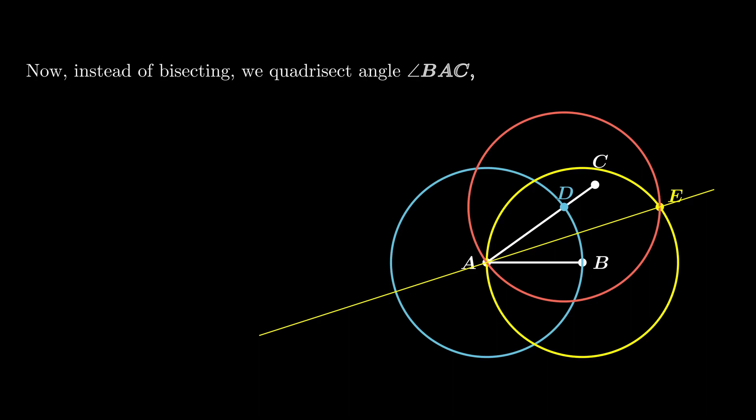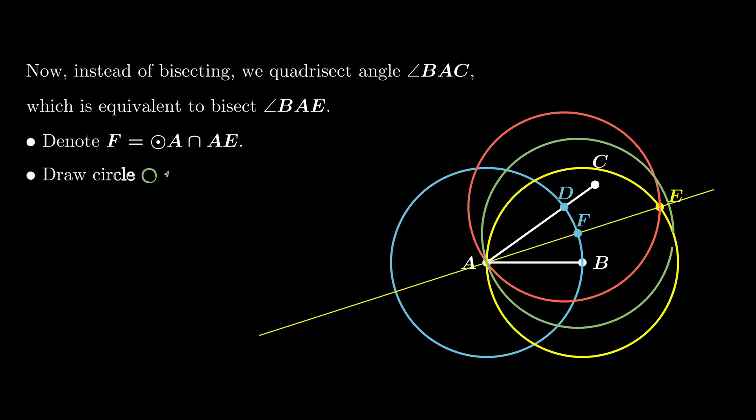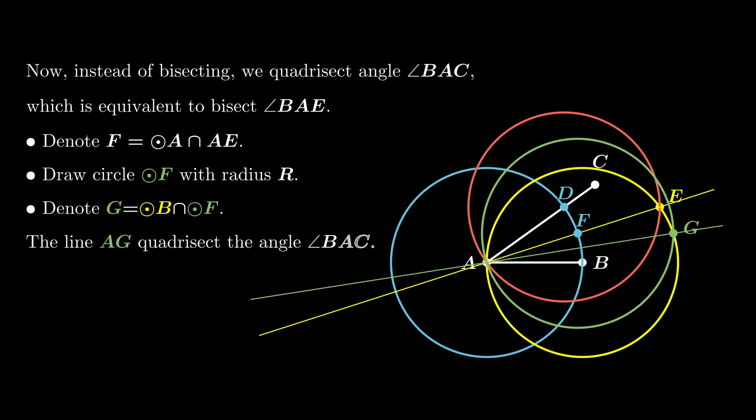Now let's move on and check what happens if we quadrisect the angle. The construction is really the same. We bisect the angle, then bisect the angle BAC. So we draw a circle, the green one, intersect the yellow circle forming a diamond at point G, and the line AG quadrisects the angle BAC.